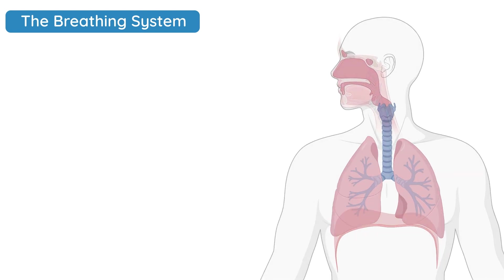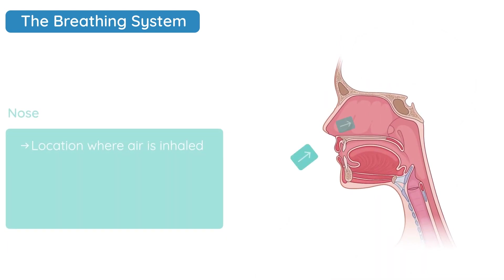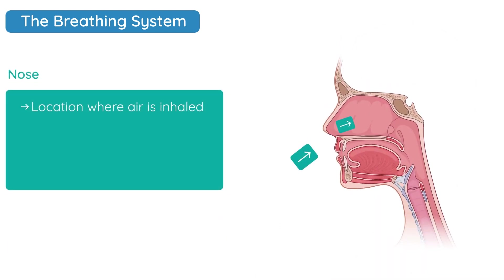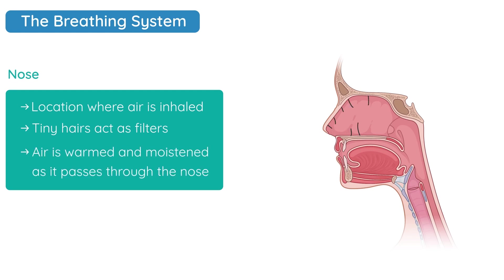Starting with the nose — the nose is where we inhale air. The nose is filled with tiny little hairs which act as filters, blocking micro particles such as dust. The air is also warmed and moistened as it passes through the nose.